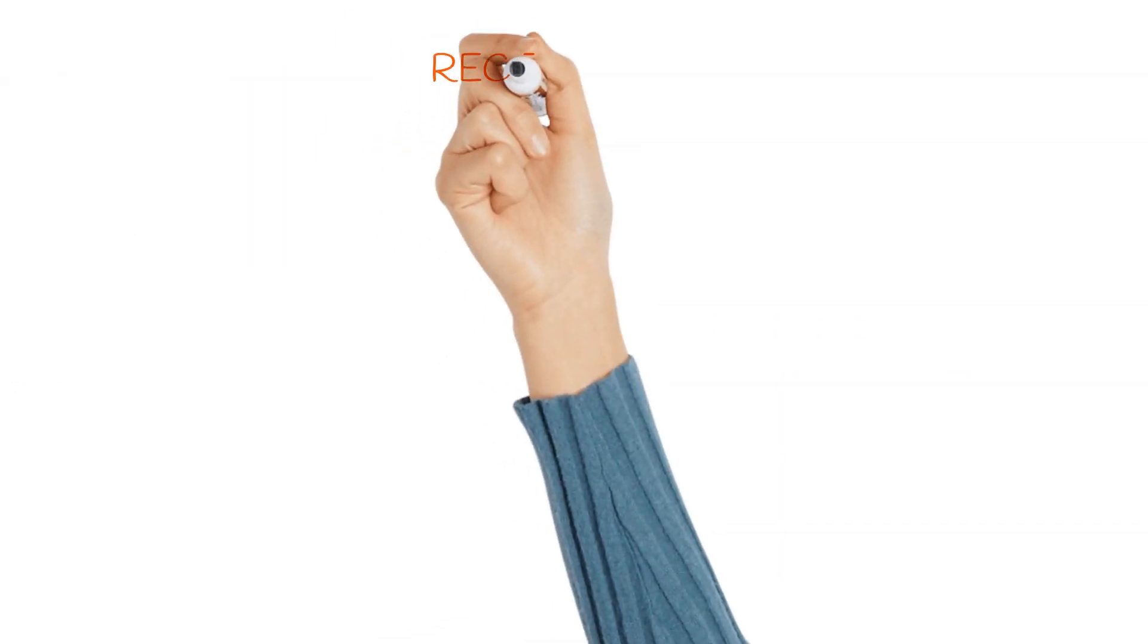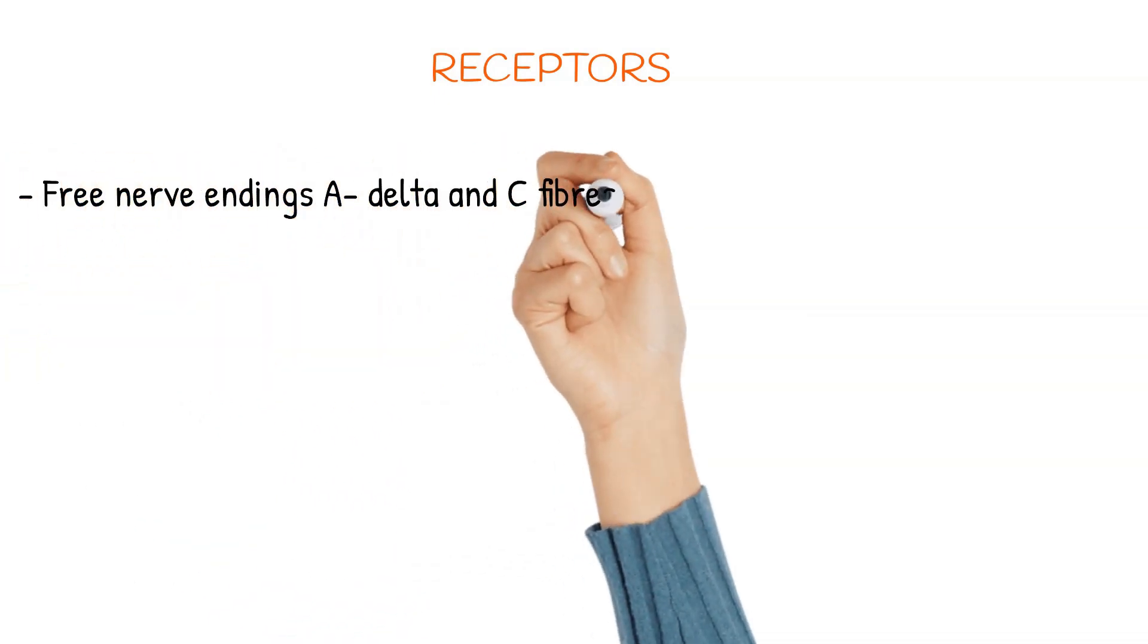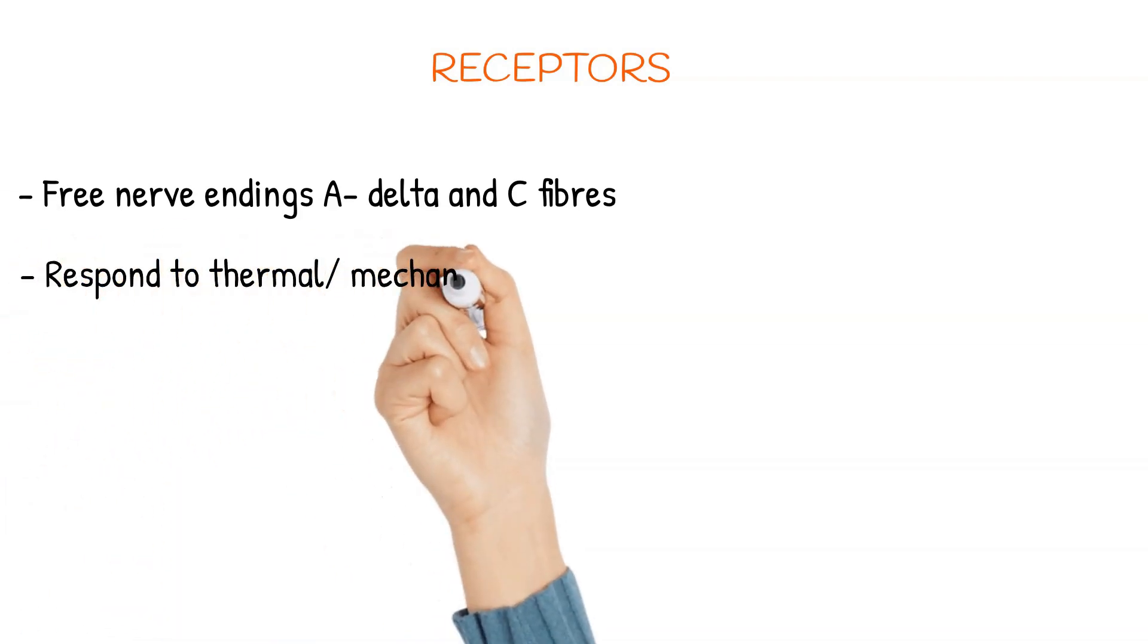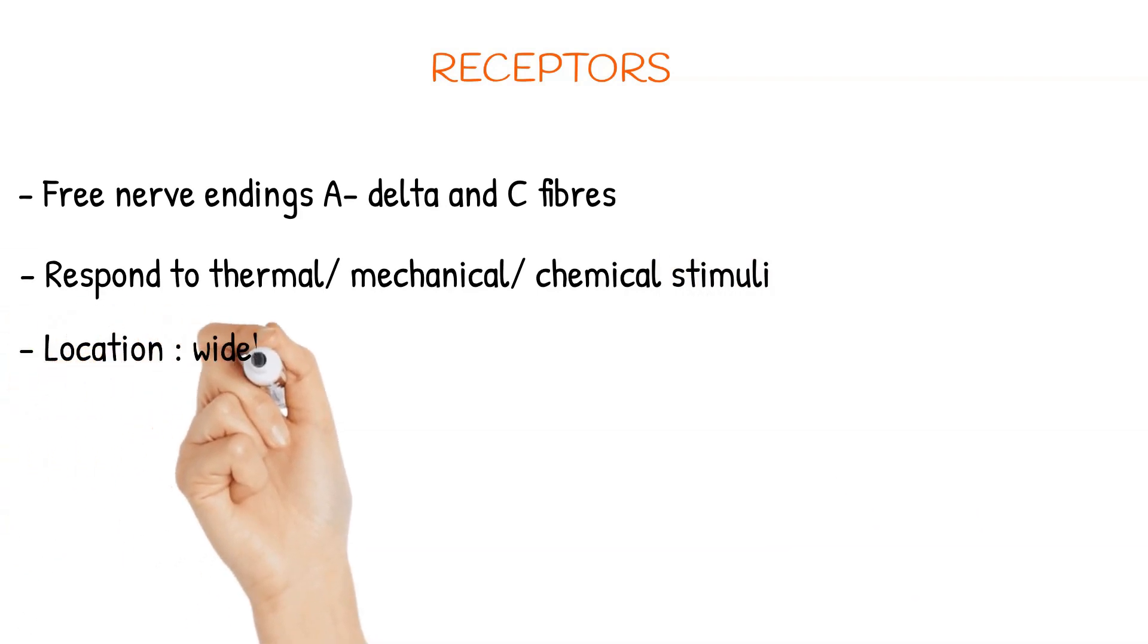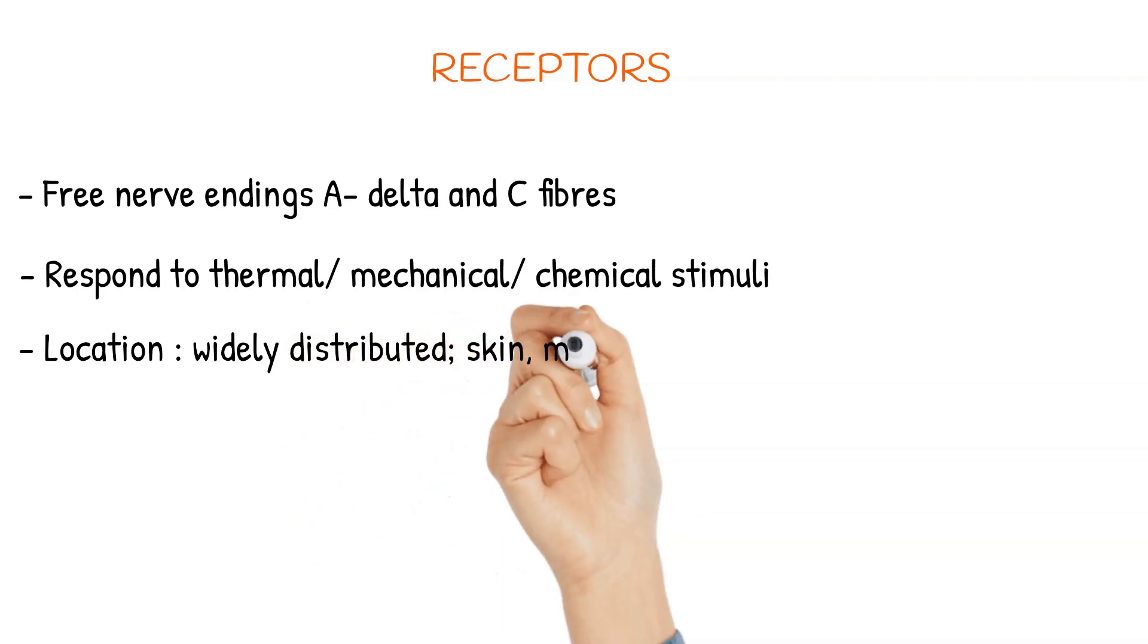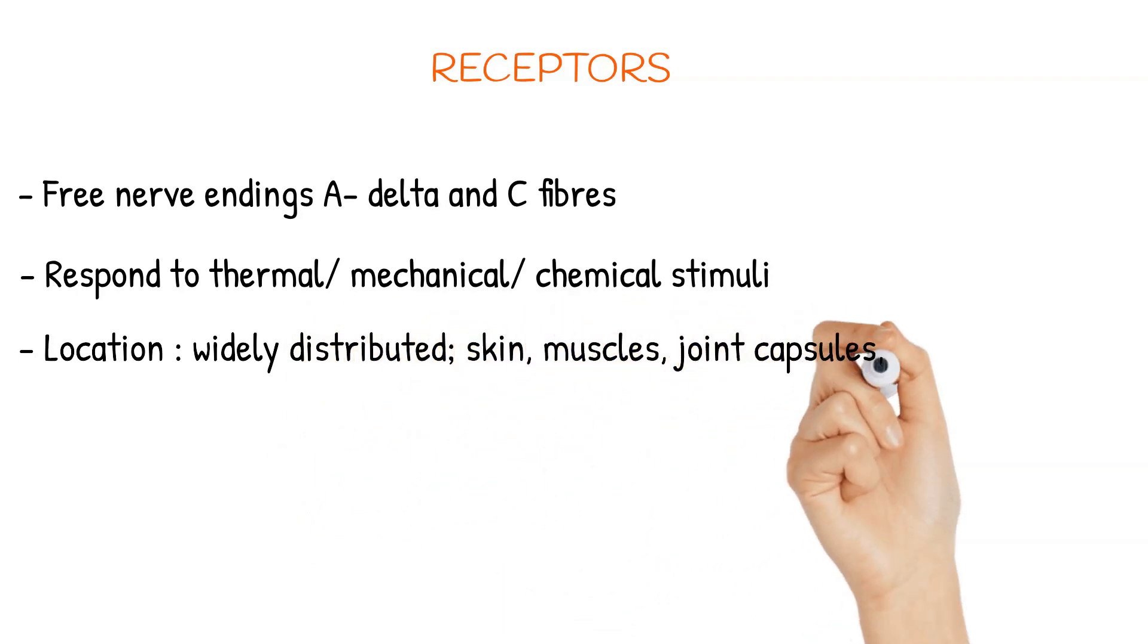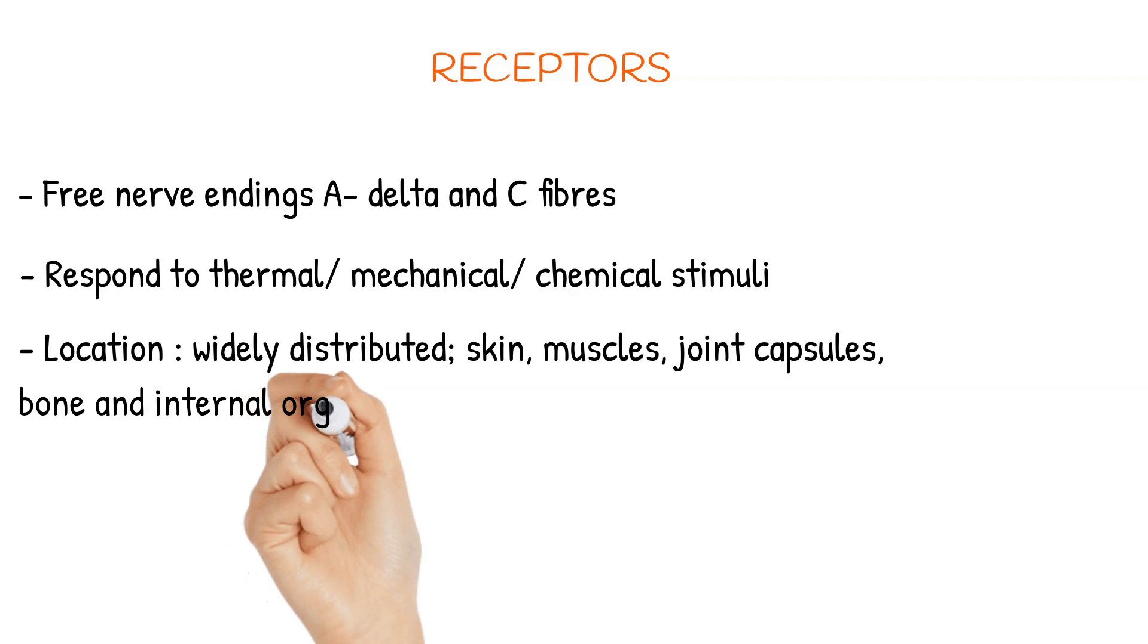So what are the receptors that are involved in the transmission of pain? They are free nerve endings of A-delta and C fibers. These receptors respond to thermal, mechanical and chemical stimuli. These receptors are distributed widely in the skin, the muscles, the joint capsules, bone and the internal organs.